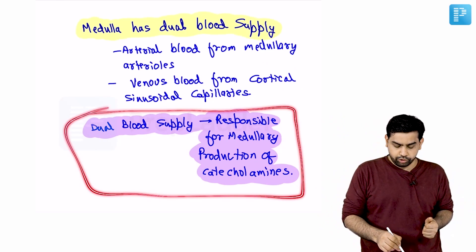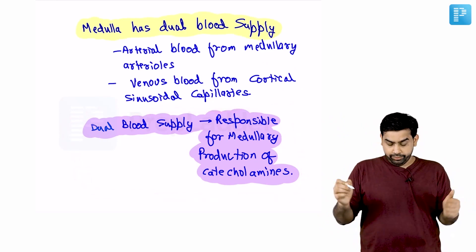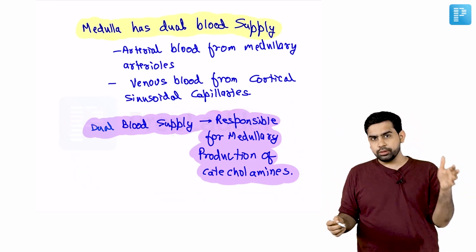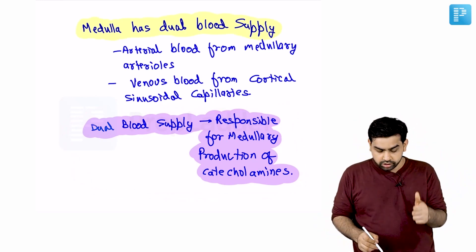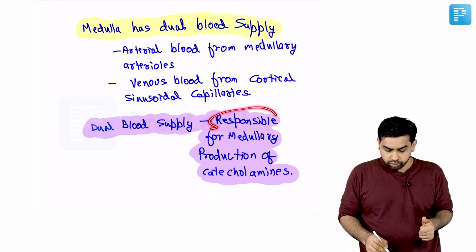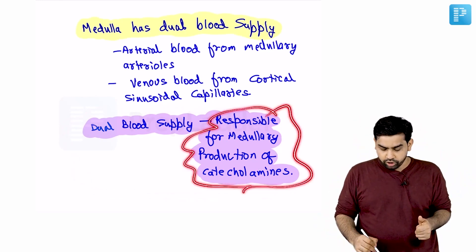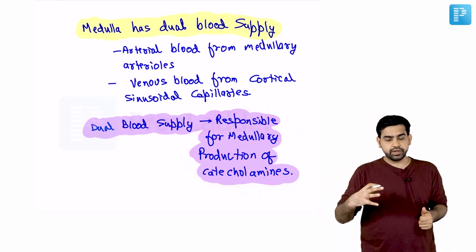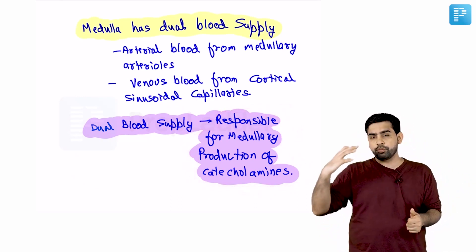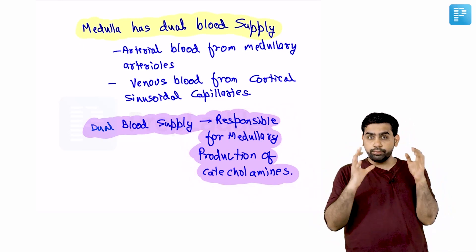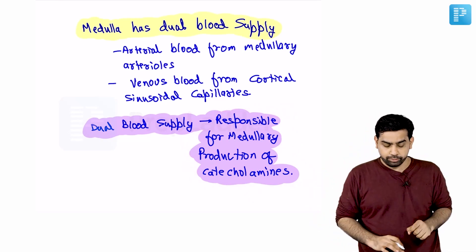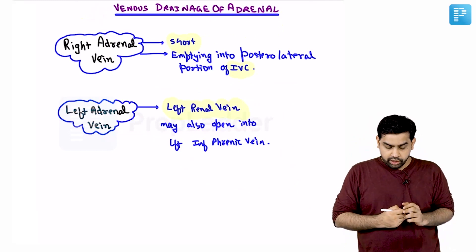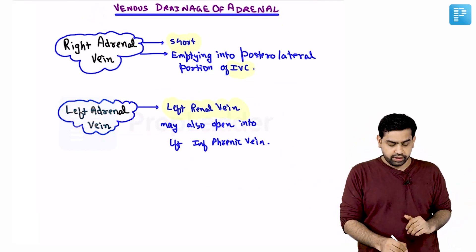This dual blood supply to the adrenal medulla is a big deal because it is responsible for the medullary production of catecholamines. Because of this dual supply to the adrenal medulla, catecholamines are formed. Venous drainage is relatively straightforward — we have the right adrenal vein and the left adrenal vein, with a difference between them.